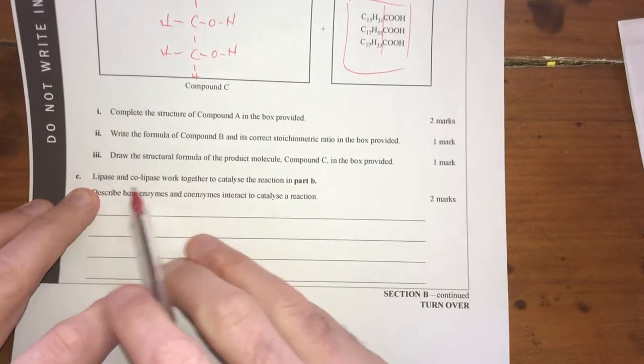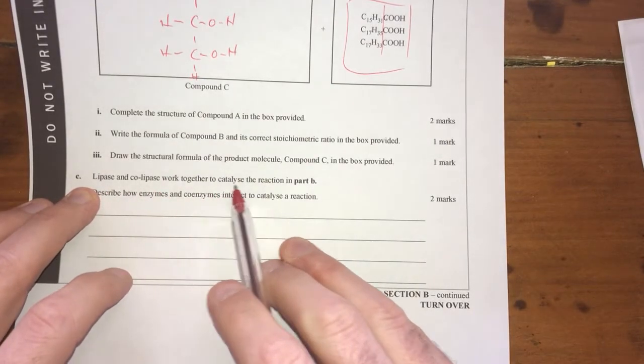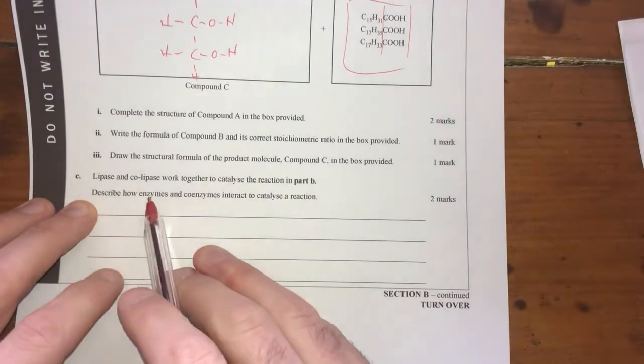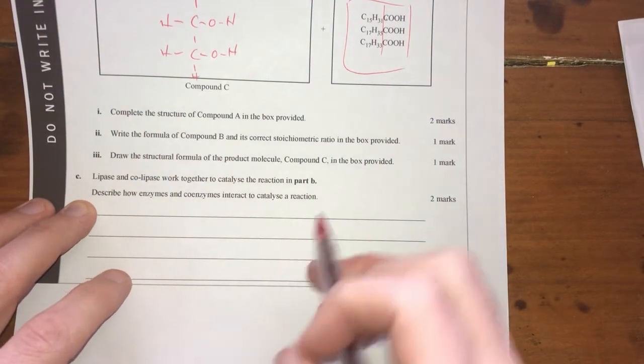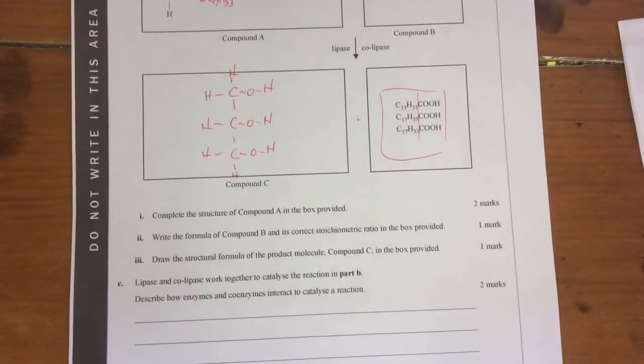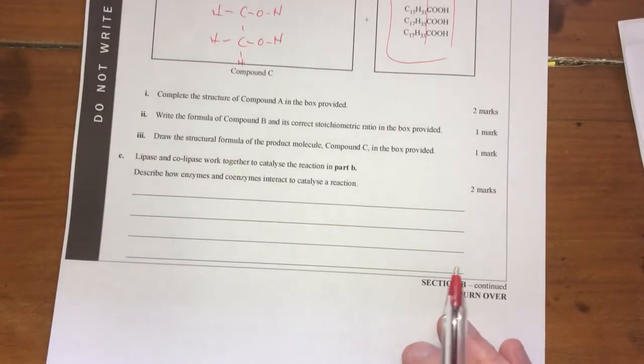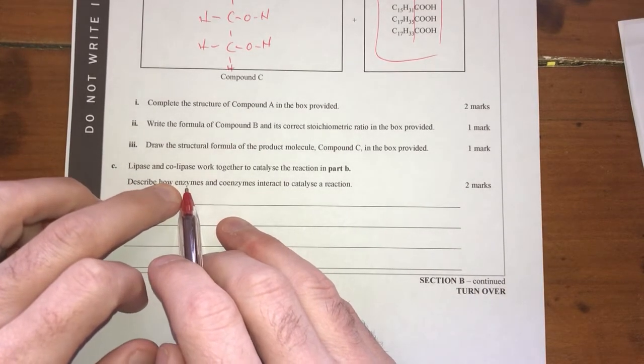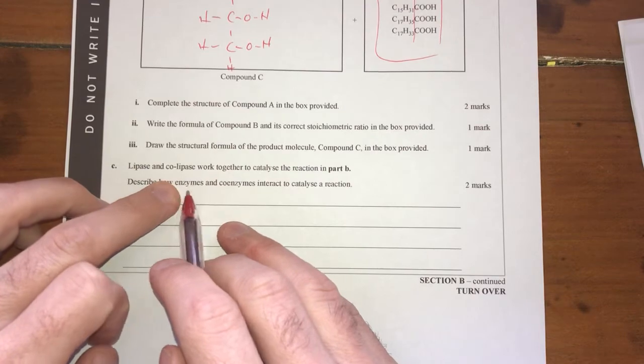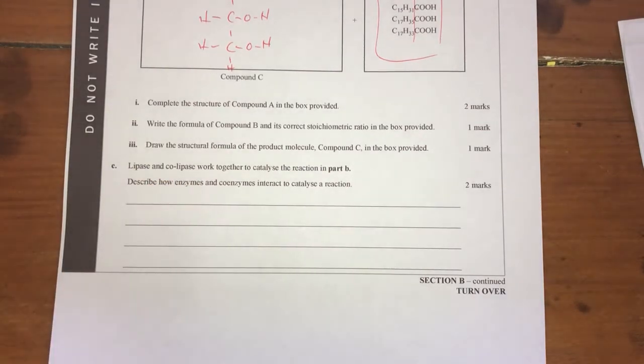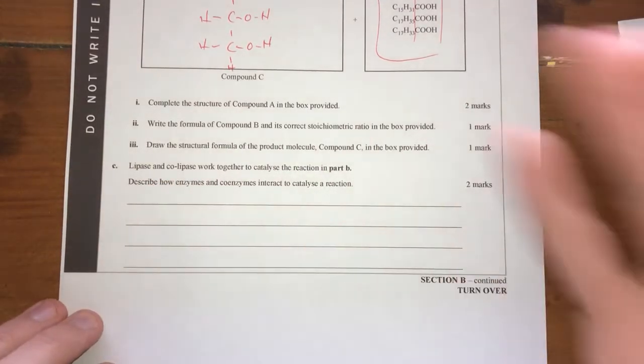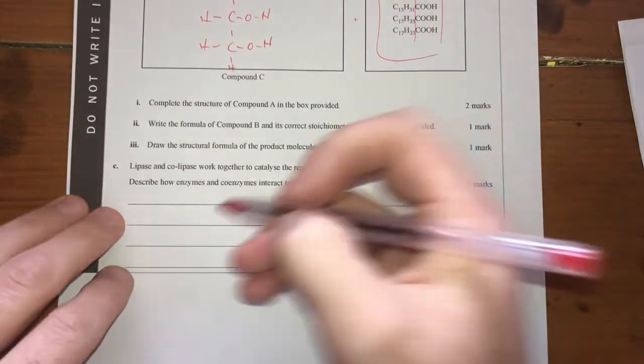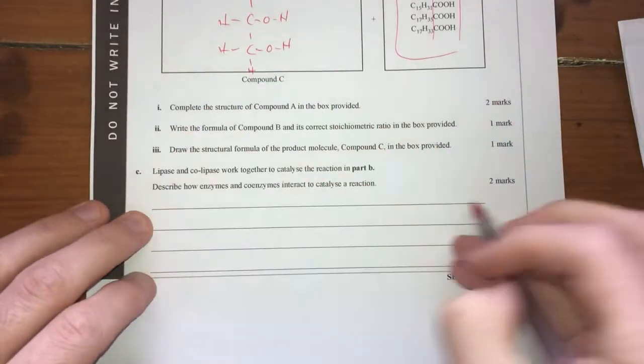Which is really cool. Moving on. Lipase and colipase work together to catalyse the reaction in Part B. Describe how enzymes and coenzymes interact to catalyse a reaction. Alright, this was where we need to think about what a coenzyme actually does. An enzyme has an active site. And that's what allows the reaction to happen. Sometimes the enzyme's active site is not actually active until a coenzyme attaches to it or does something to make it active.